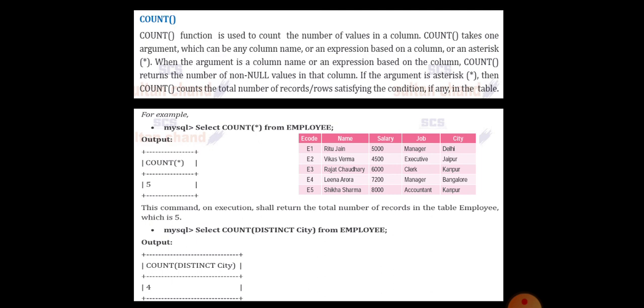If you are giving DISTINCT of City, so it will select the city Delhi, Jaipur, Kanpur, Bangalore. The Kanpur is repeated. So if you are giving COUNT of DISTINCT of City, the compiler will do the function DISTINCT of City at first. That is Delhi, Jaipur, Kanpur, Bangalore. So that we will get only 4 counts.